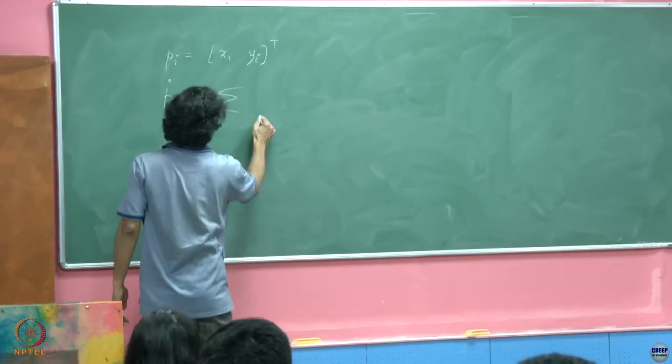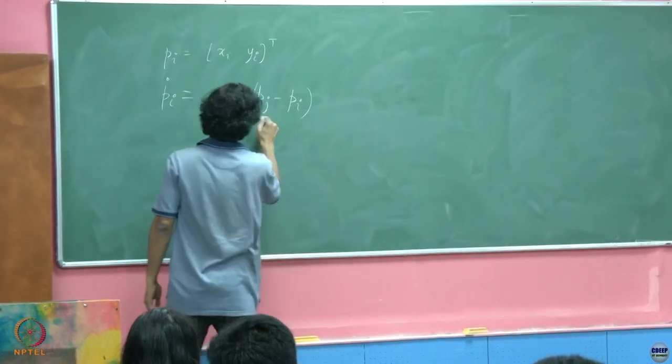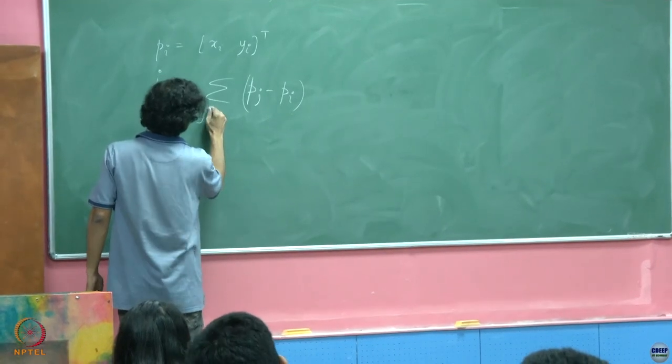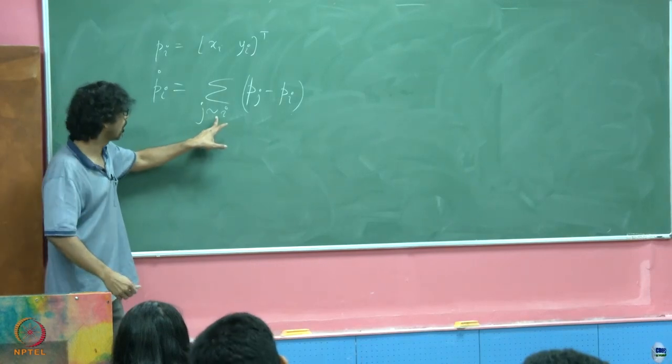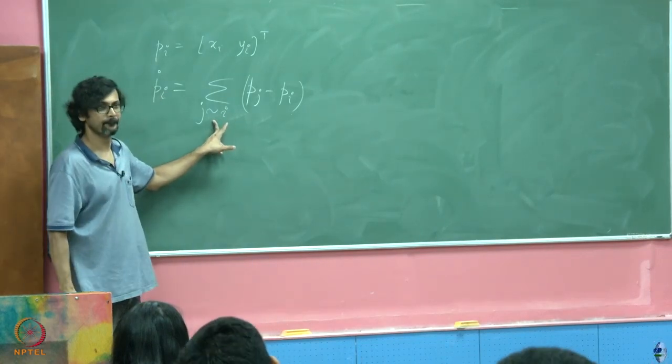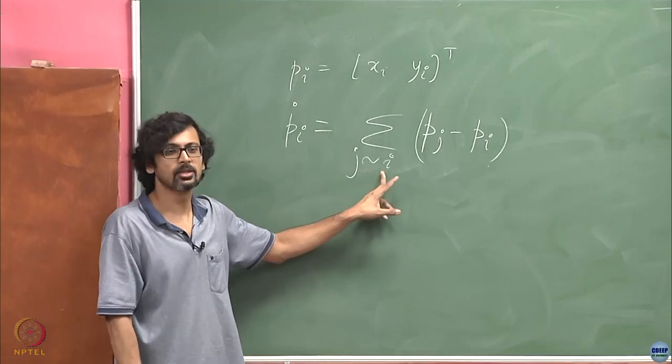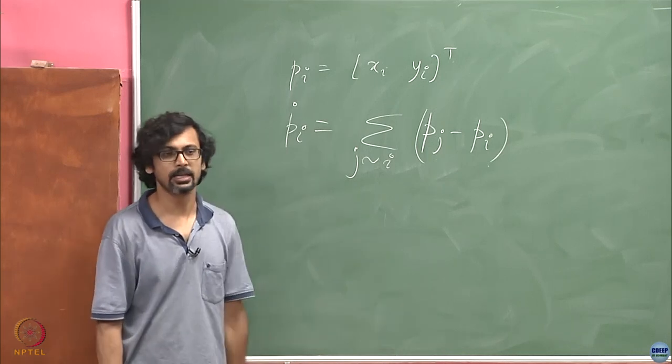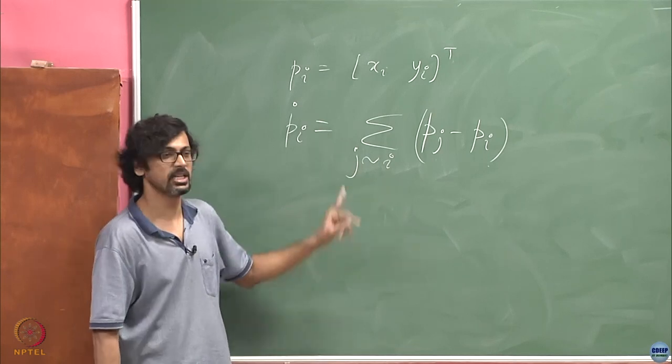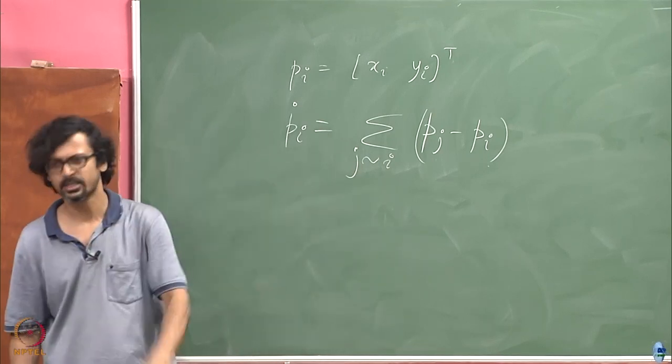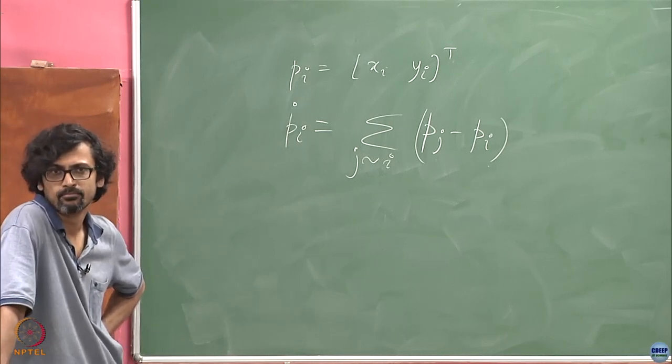P_i dot equals summation P_j minus P_i such that this notation means that i is listening to j. In other words, j is a neighbor of i. In graph theoretic language, there is an edge connecting the i-th node to the j-th node. If I am not even connected to you, if I don't know what you think, how am I going to be influenced by your opinion?